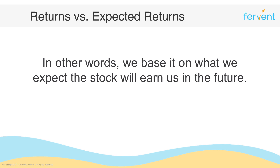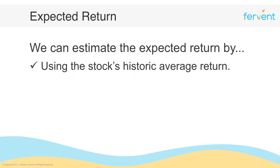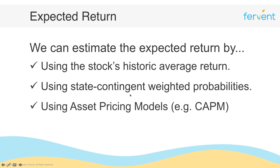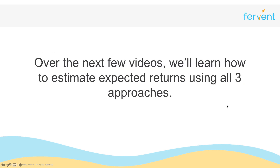There are three main ways to calculate the expected return. First, you can use the stock's historical average return — probably the easiest way. Second, you can look at state-contingent weighted probabilities, which sounds fancier than it really is. Lastly, you can use asset pricing models, for instance the CAPM — the Capital Asset Pricing Model. Over the next few videos, we'll learn how to estimate expected returns using all three approaches.